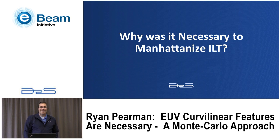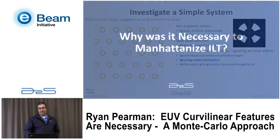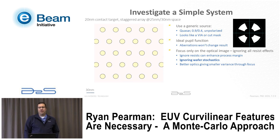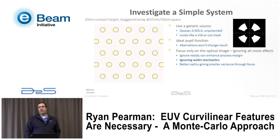Why is it necessary to even discuss Manhattan ILT today? We'll introduce a very simple system: a 20 nanometer contact at about 45-50nm pitch depending on direction — a staggered array. This looks similar to any contact or via layer you'd want to do with EUV. We're doing a purely optical simulation only.